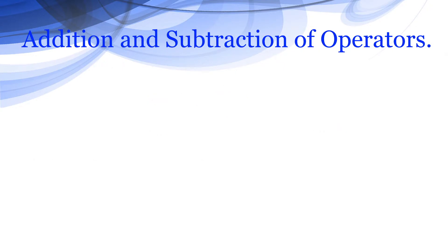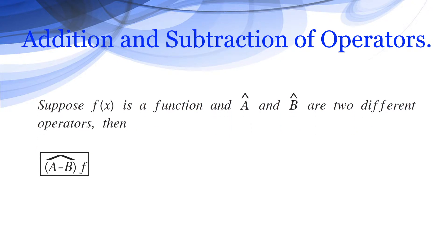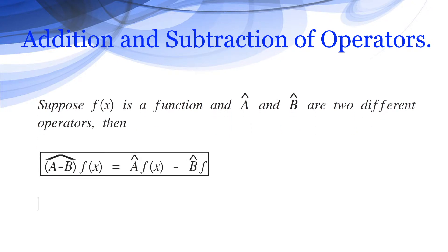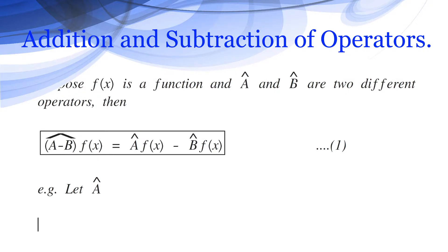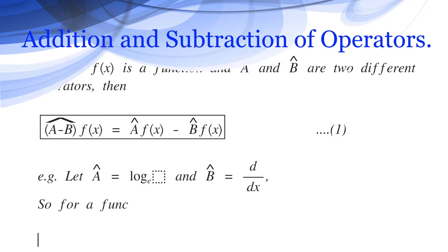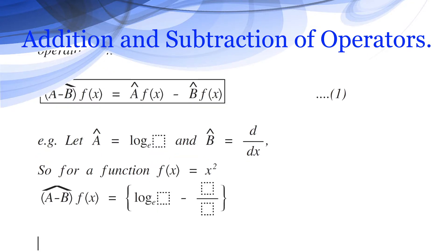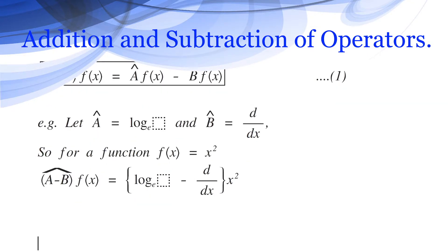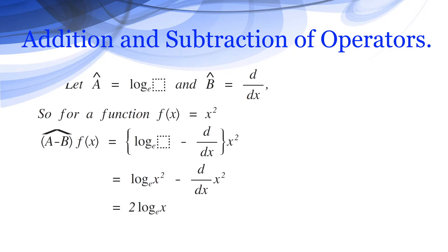Similarly for subtraction, suppose f(x) is a function and Â and B̂ are two different operators. Then (Â − B̂)f(x) = Âf(x) − B̂f(x). This is equation 1. For example, let Â = log base e and B̂ = d/dx, and f(x) = x². Then (Â − B̂)f(x) = log_e(x²) − d/dx(x²) = 2·log_e(x) − 2x. This is equation 2.